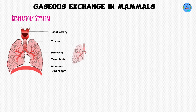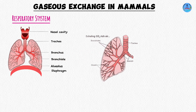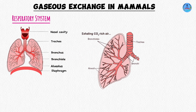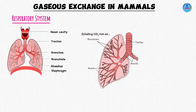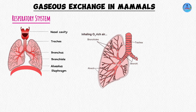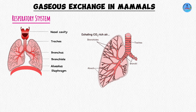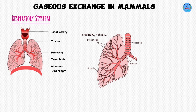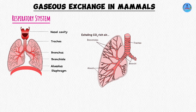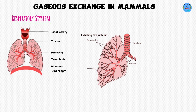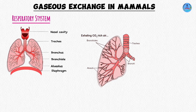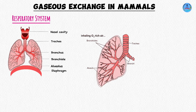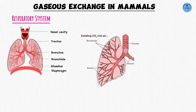As the trachea enters the lungs, it divides to form two smaller tubes known as bronchi — a singular one is known as a bronchus. The bronchi further divide to form even smaller tubes called bronchioles. The bronchioles are the ones that open up into the air sacs that we know as alveoli, which are found in the lungs.